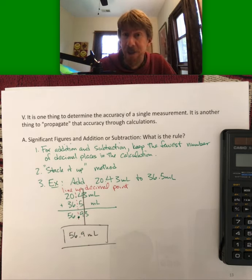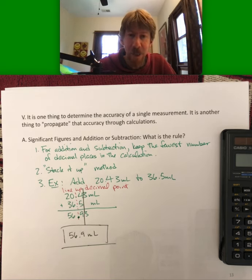56.9 milliliters is my answer. And so for addition or subtraction, you can have numbers with four and three sig figs and end up with three.